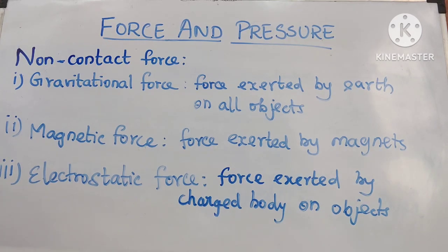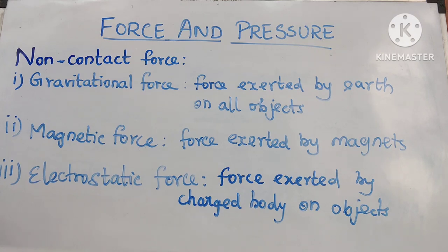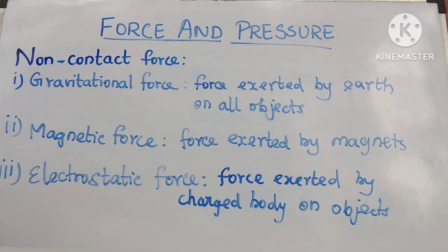Next, magnetic force: the force of attraction or repulsion exerted by magnets. A magnetic field is present around magnets and acts on objects at a distance. In a magnet, like poles — north-north and south-south — repel each other, and unlike poles — south-north — attract each other.